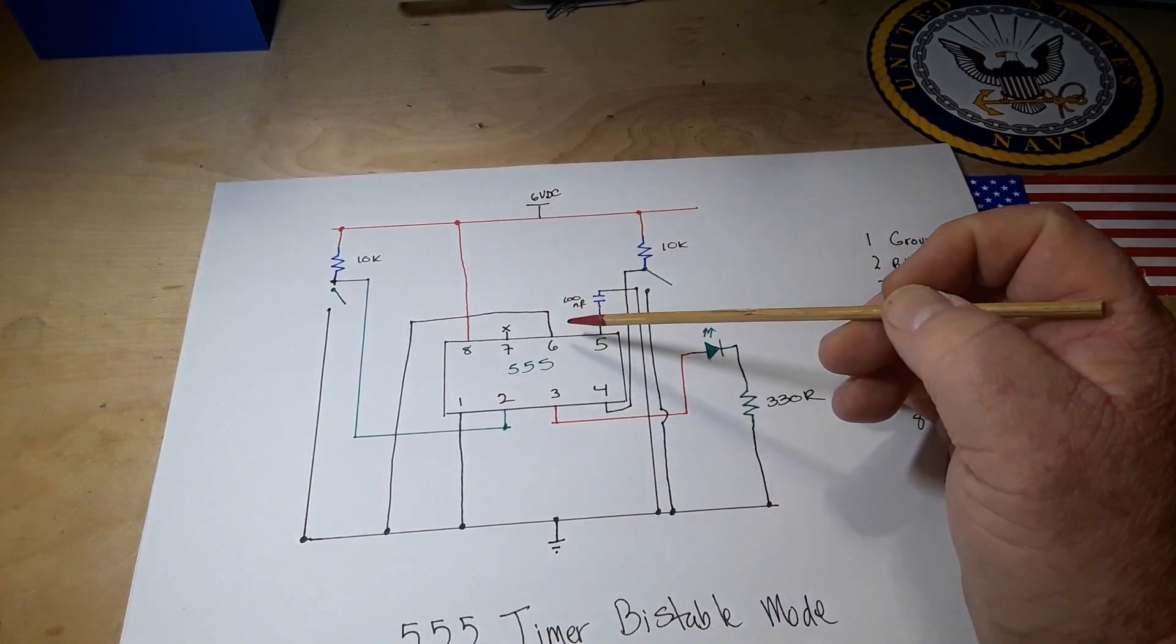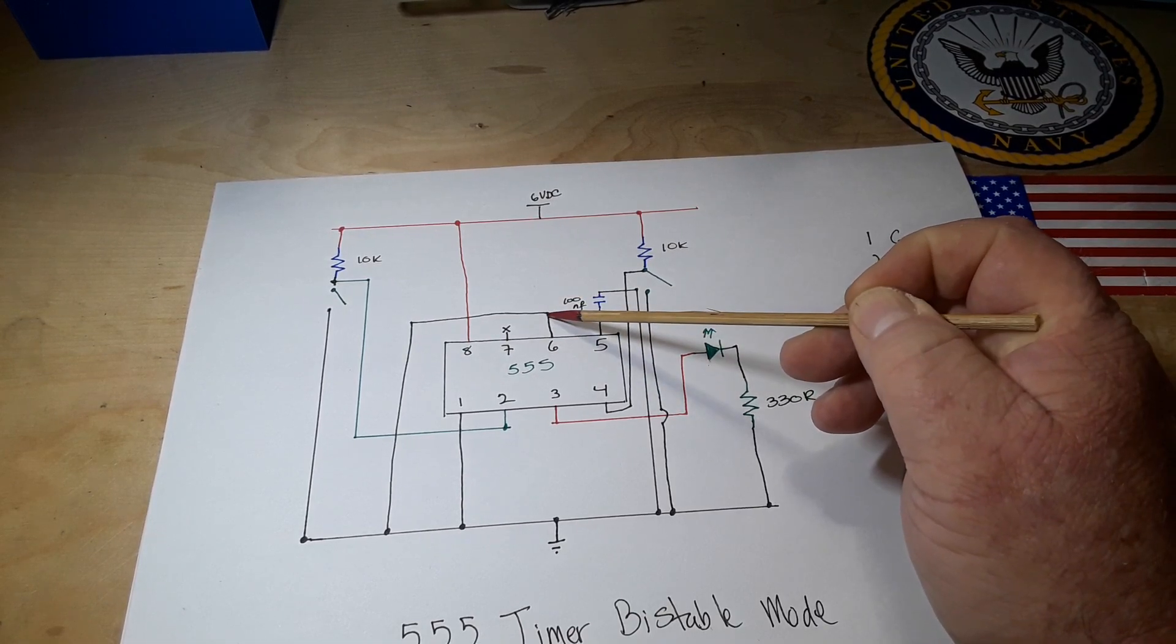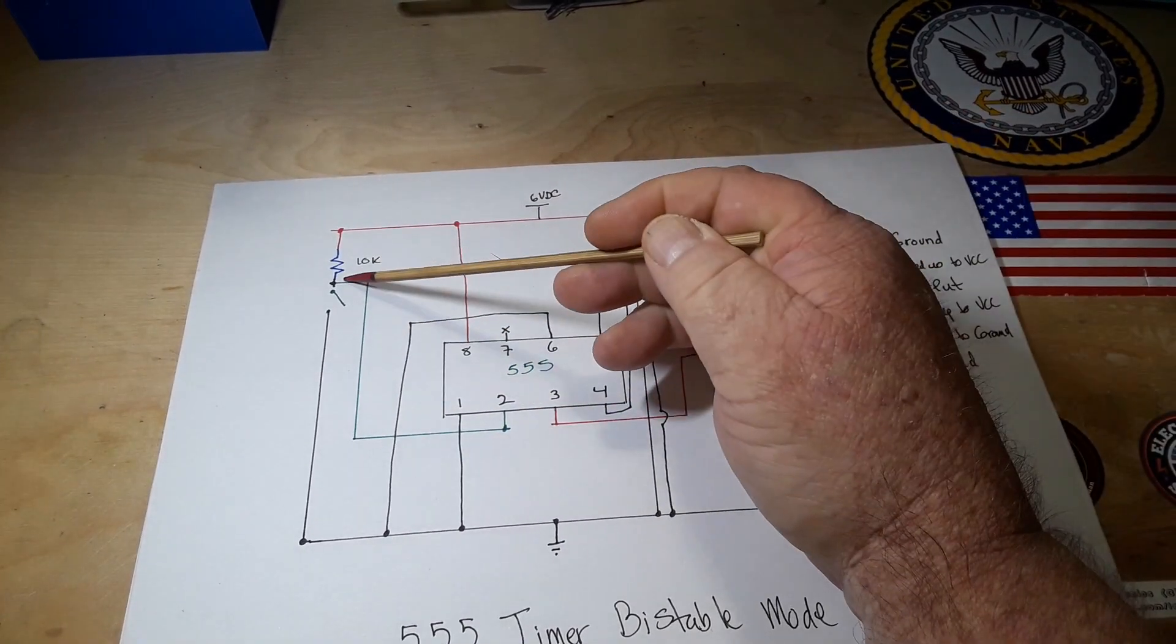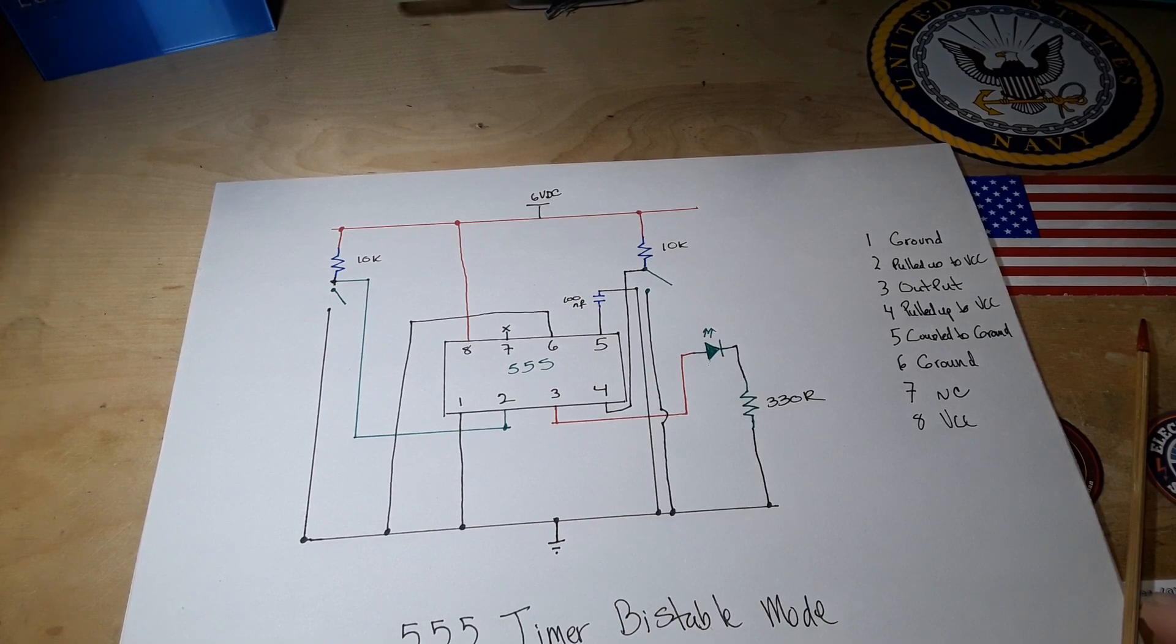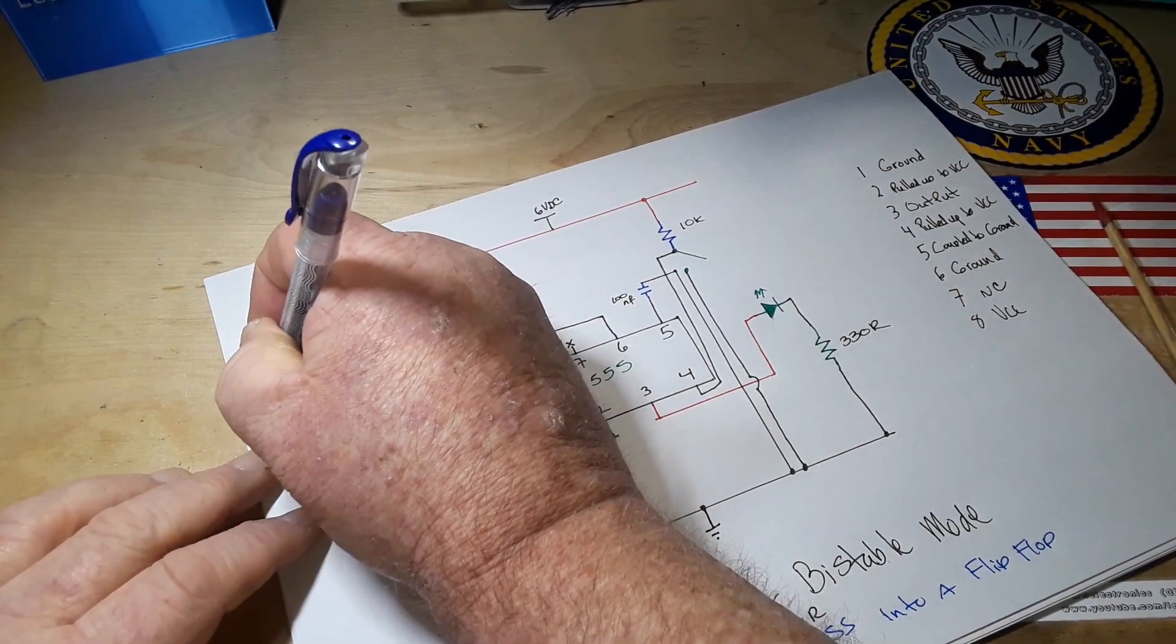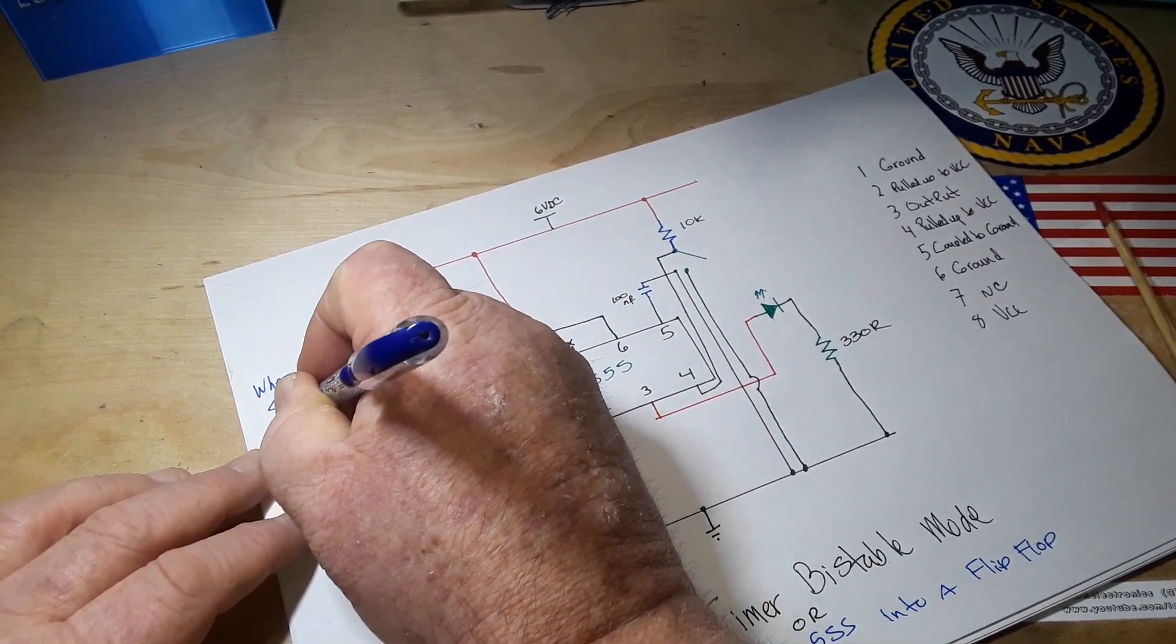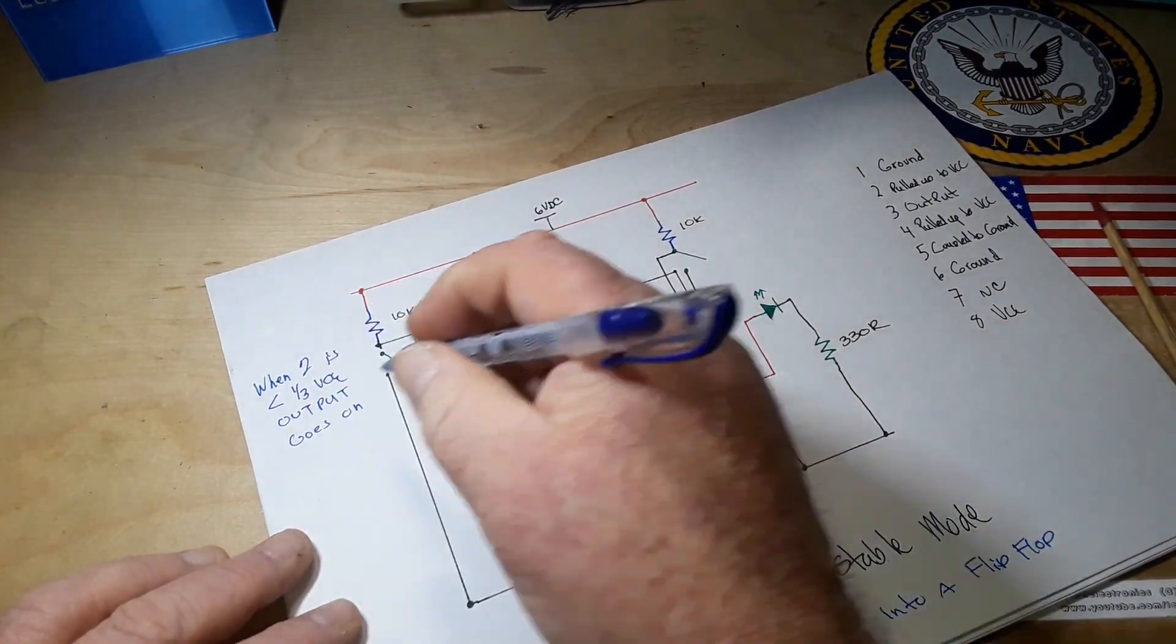Pin 6, one of our favorite pins, the threshold pin, is connected directly to ground. What does that mean? This is how we're eliminating the timing. If that threshold pin never goes above two-thirds VCC, it will never turn off the output. The output comes on when the trigger, in this case pin 2, which is currently being pulled high with a 10k resistor, when this one...